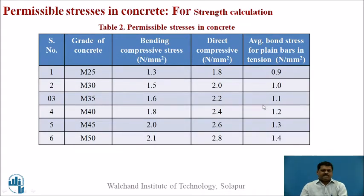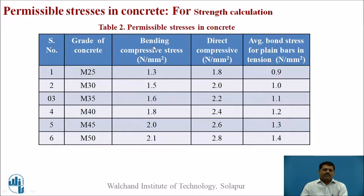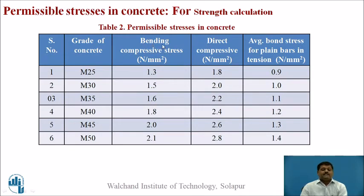Next are permissible stresses in concrete for strength calculation — used when designing or calculating section capacity. These include bending compressive stress, direct compressive stress, and average bond stress for plain bars in tension, tabulated from M25 to M50. Vertical walls of elevated tanks and conical members are subjected to bending tension, bending compression, direct tension, and direct compression, so these values are needed once section size is decided.